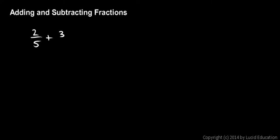2 over 5 plus 3 over 8. Again, we can't add the 2 and the 3 in this case because the 2 represents 2 fifths and the 3 represents 3 eighths. They're different things. A fifth is a different thing from an eighth. So these are different types of things. They're unlike fractions.